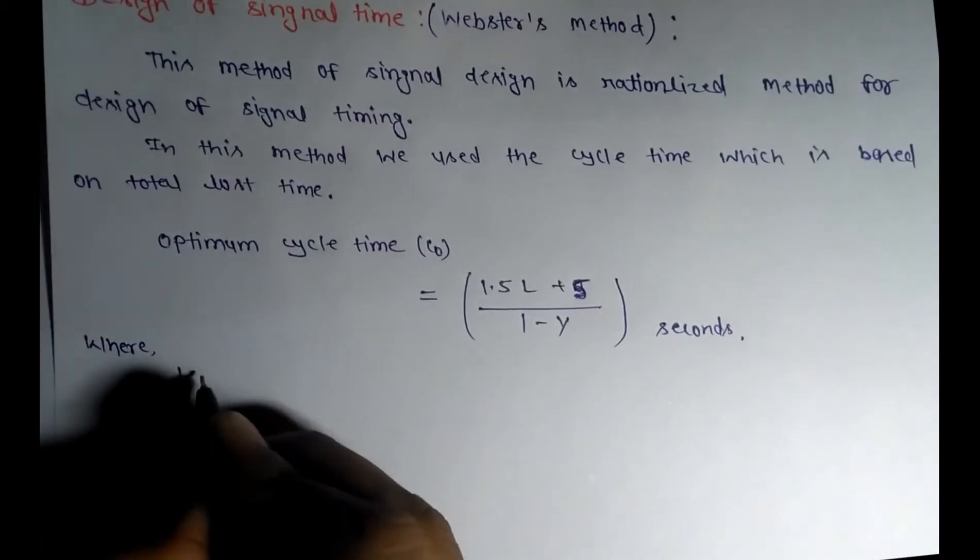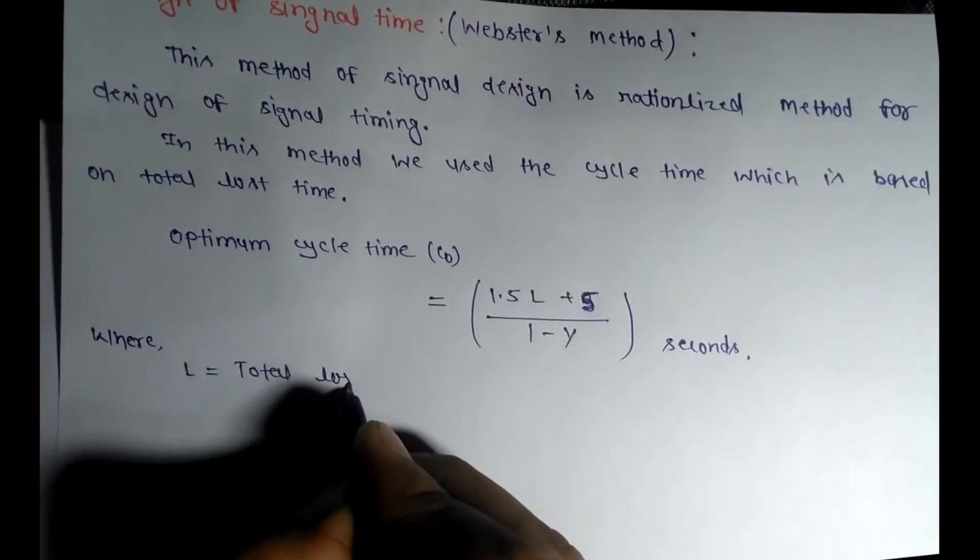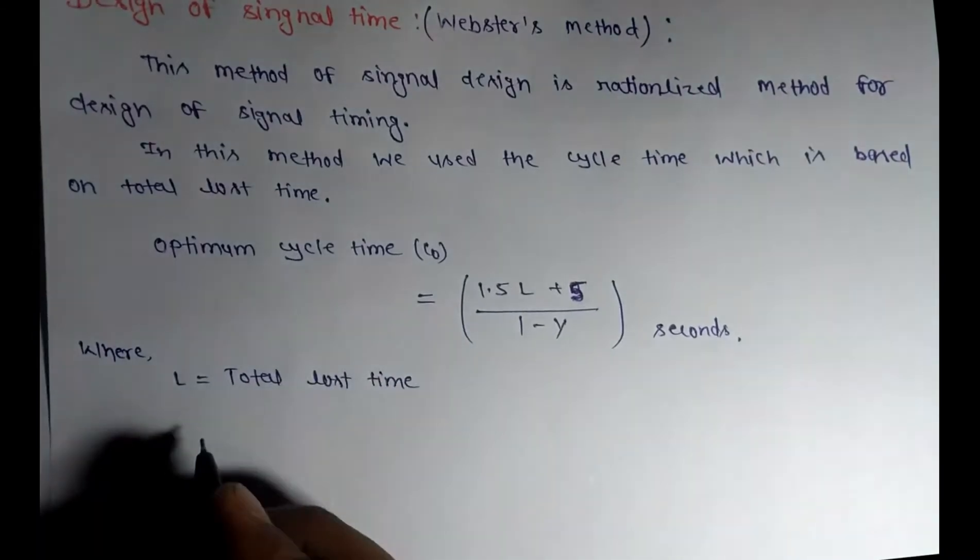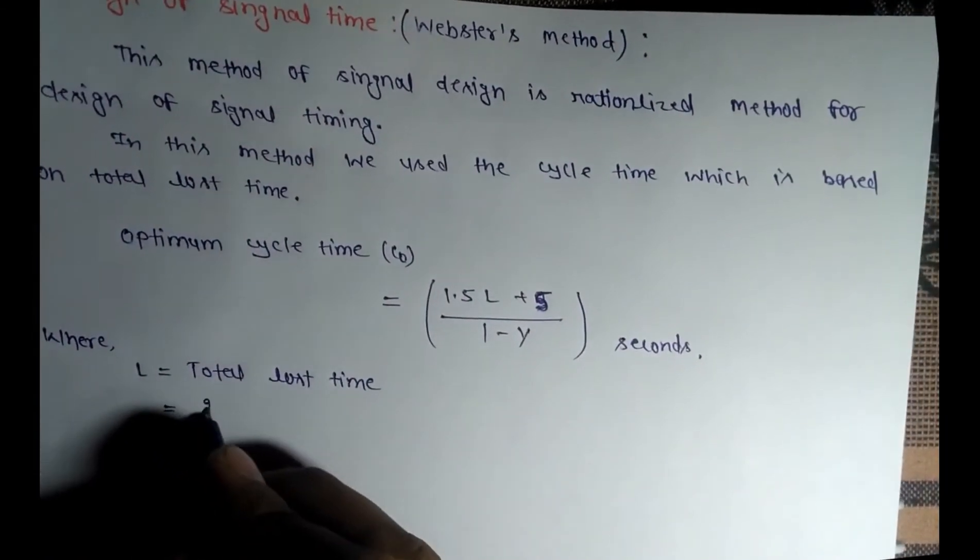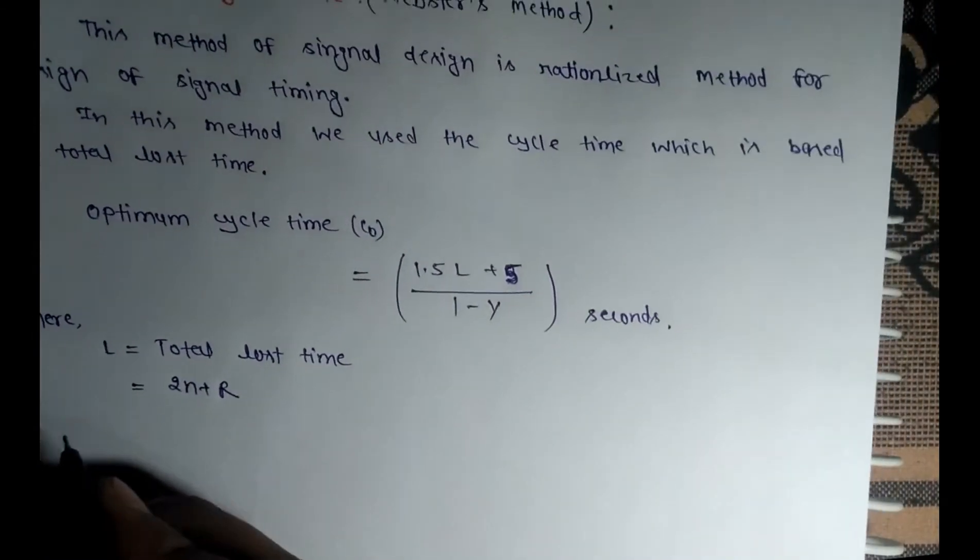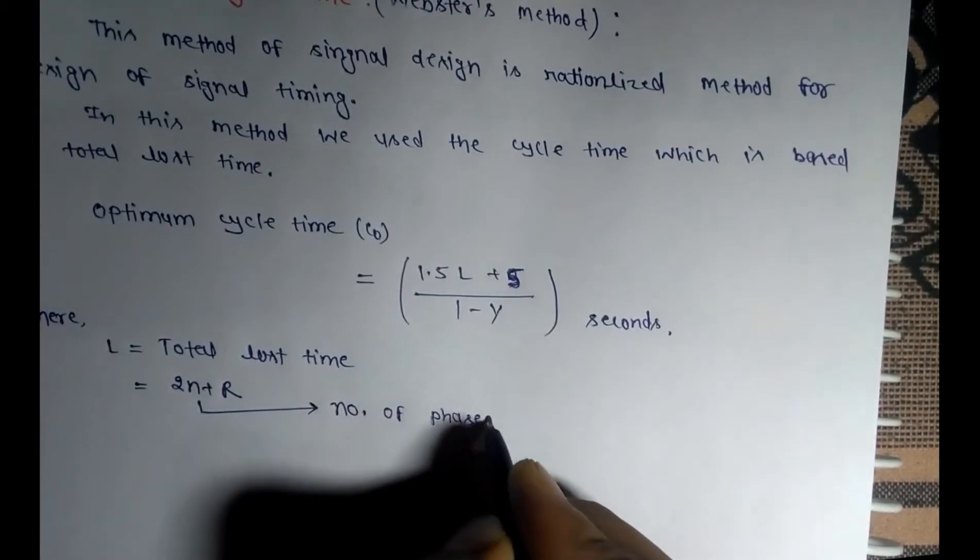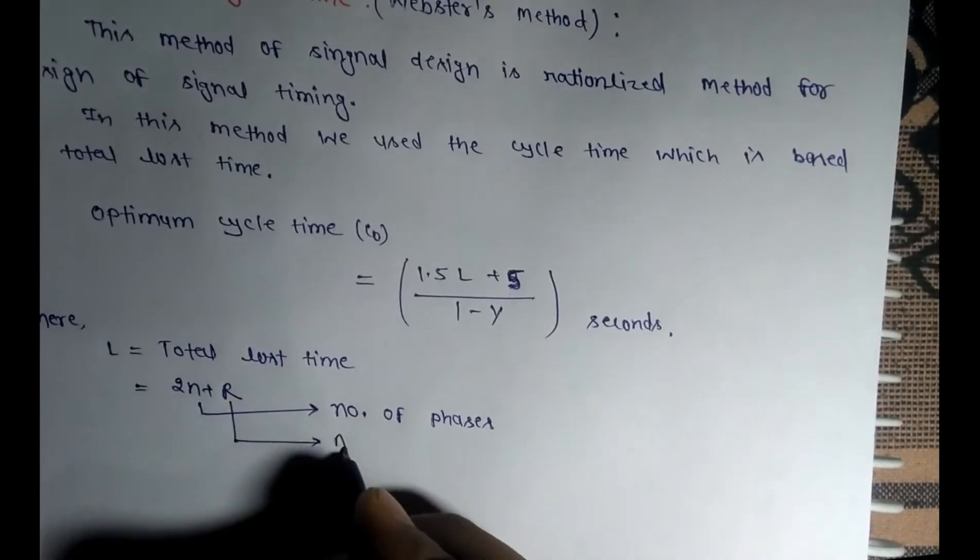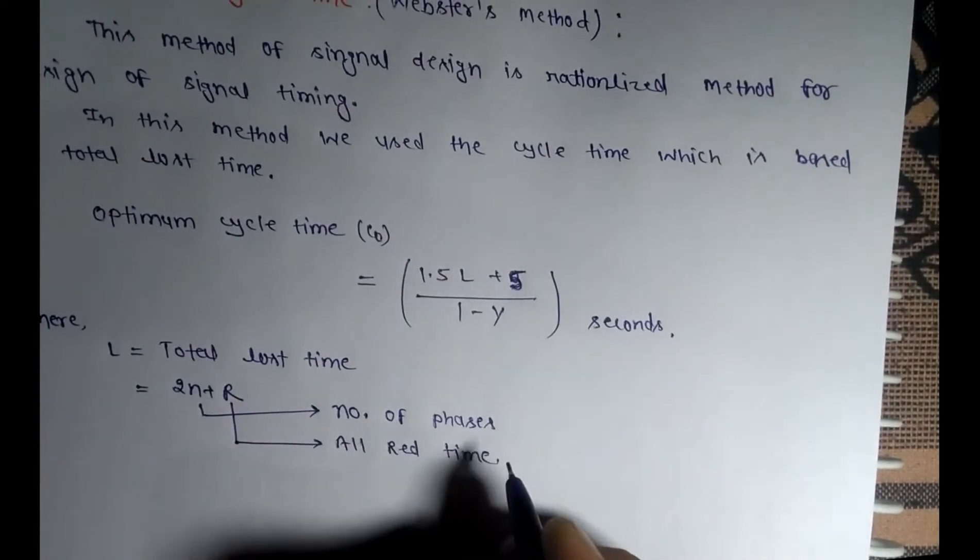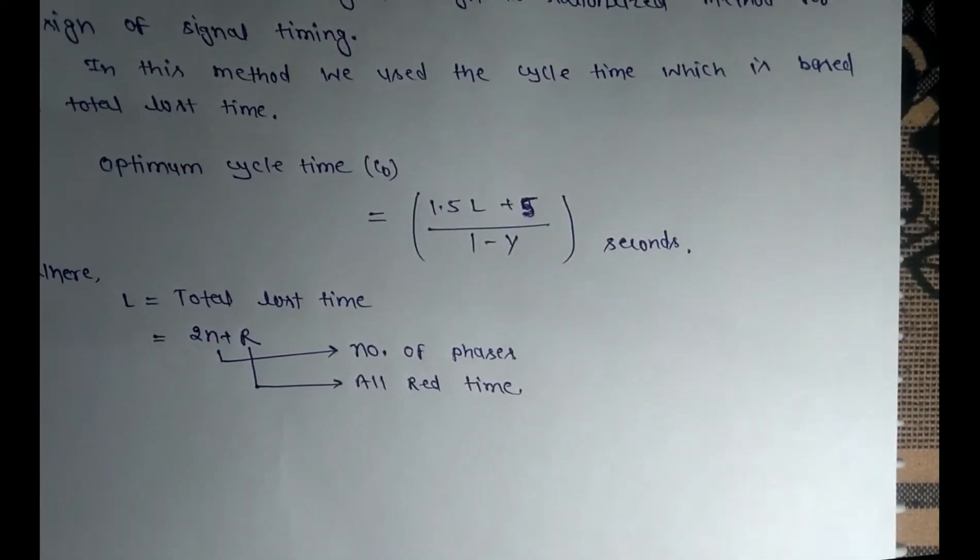Where L equals total loss time per cycle, which is 2N + R, where N is the number of phases and R is the all red time.